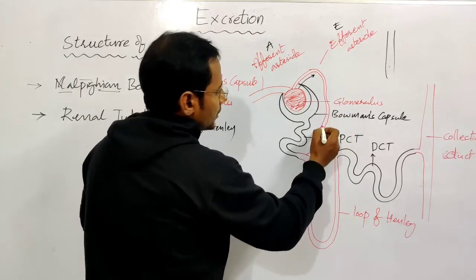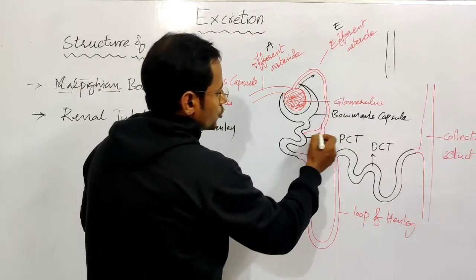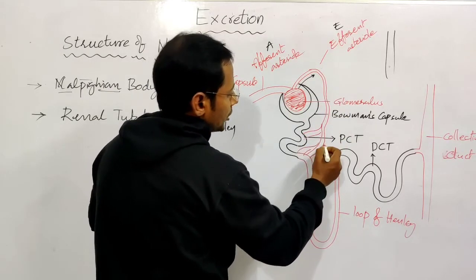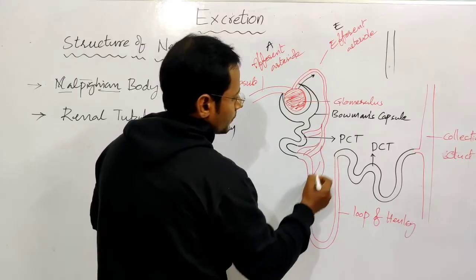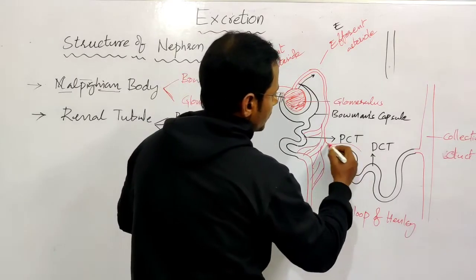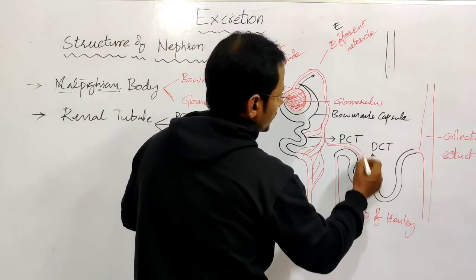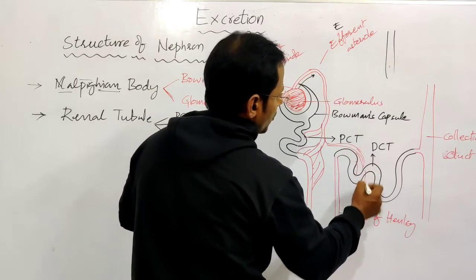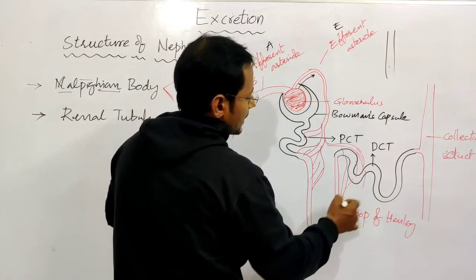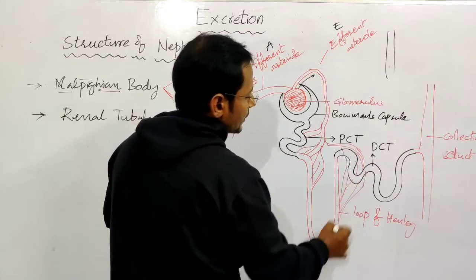This convoluted tubule is in the loop of Henley. Next, the distal convoluted tubule is surrounded by a capillary network.